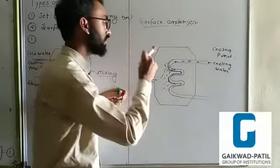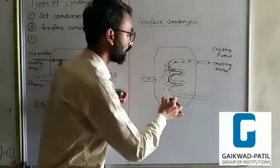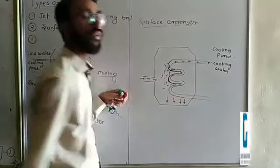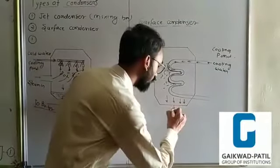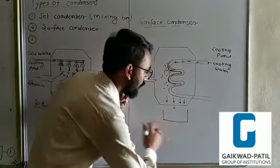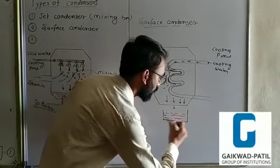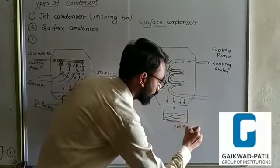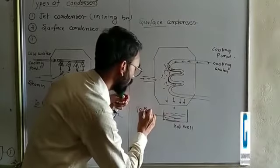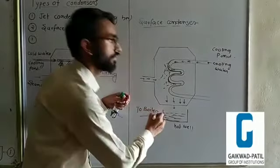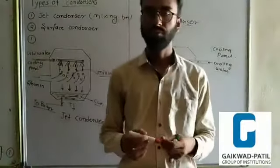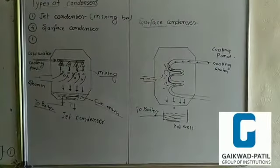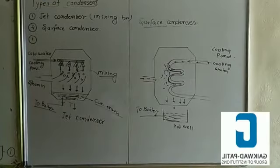The steam decreases in temperature and is converted into liquid, which collects in what is called the hot well. This condensate collected at the bottom is referred to as the hot well. Thank you.